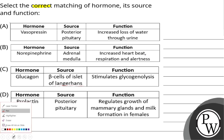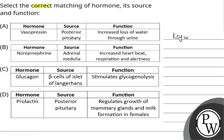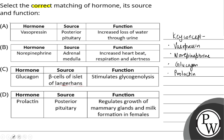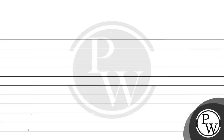So firstly let's see the key concept of this question. We are going to discuss the key concepts of vasopressin, norepinephrine, glucagon, and prolactin hormone, one by one.